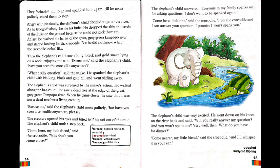The elephant's child said most politely: 'Excuse me, have you seen a crocodile anywhere?' This is a polite way of asking — you can use 'Have you seen my pen, mummy?' or 'Have you seen my shoes?' in daily life. Adding 'please' makes it even more polite. The creature opened his eyes and lifted half his tail out of the mud.